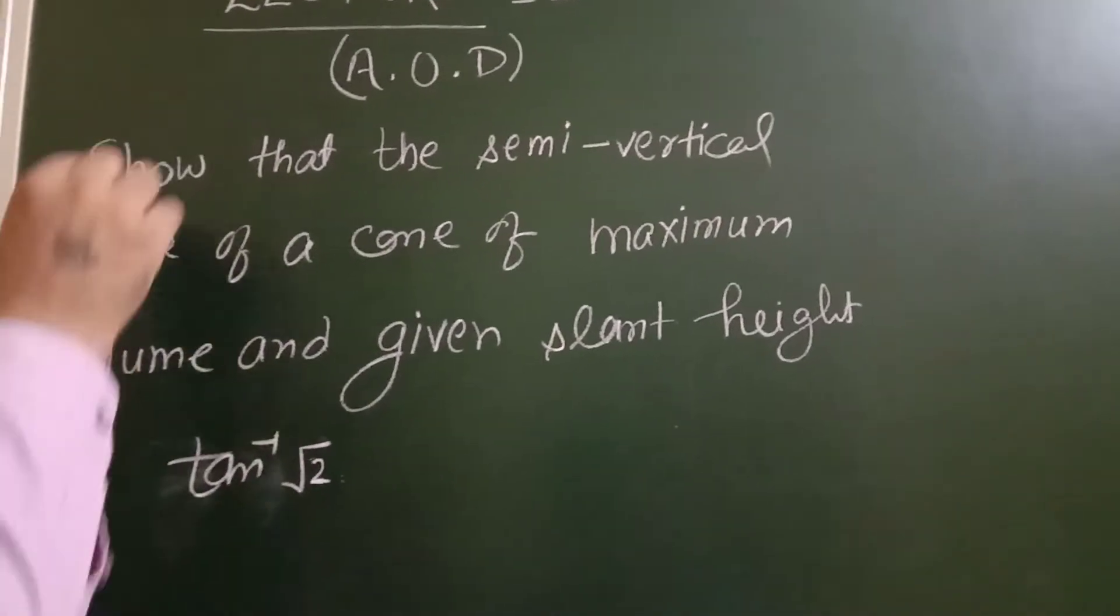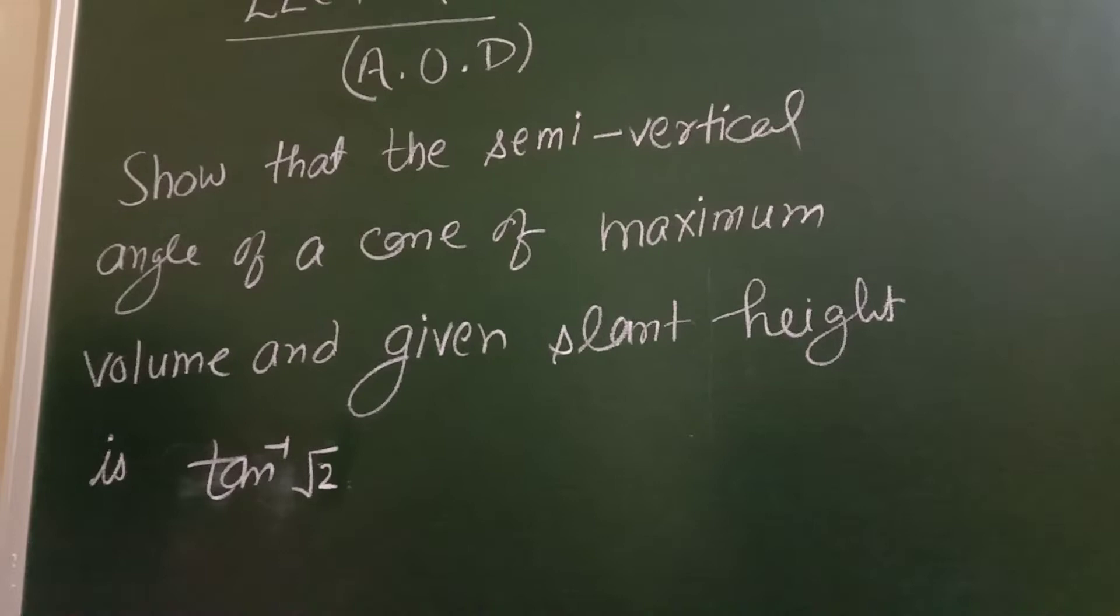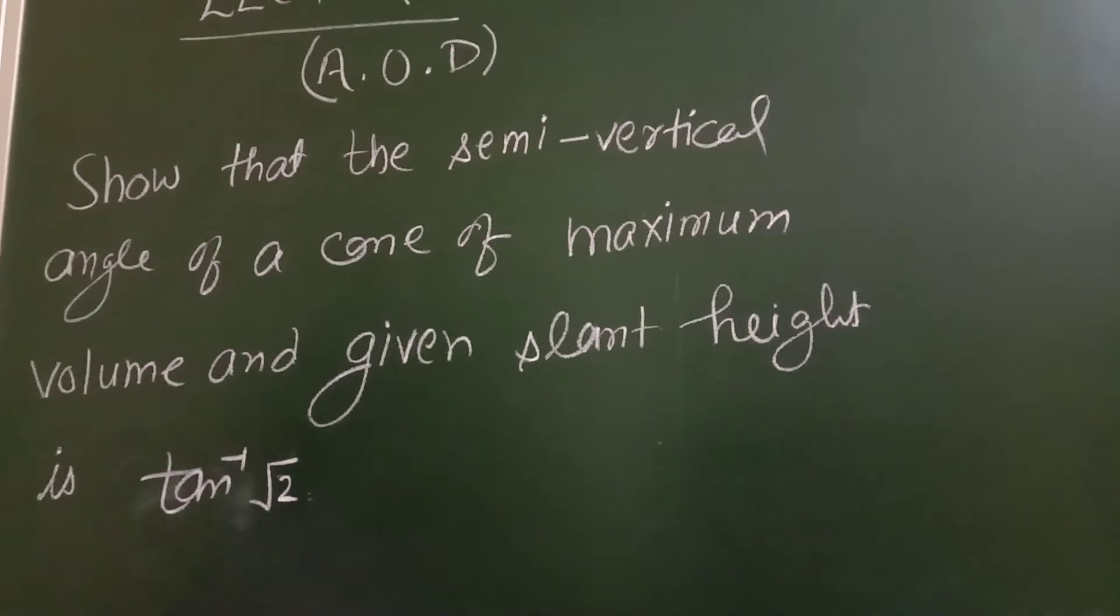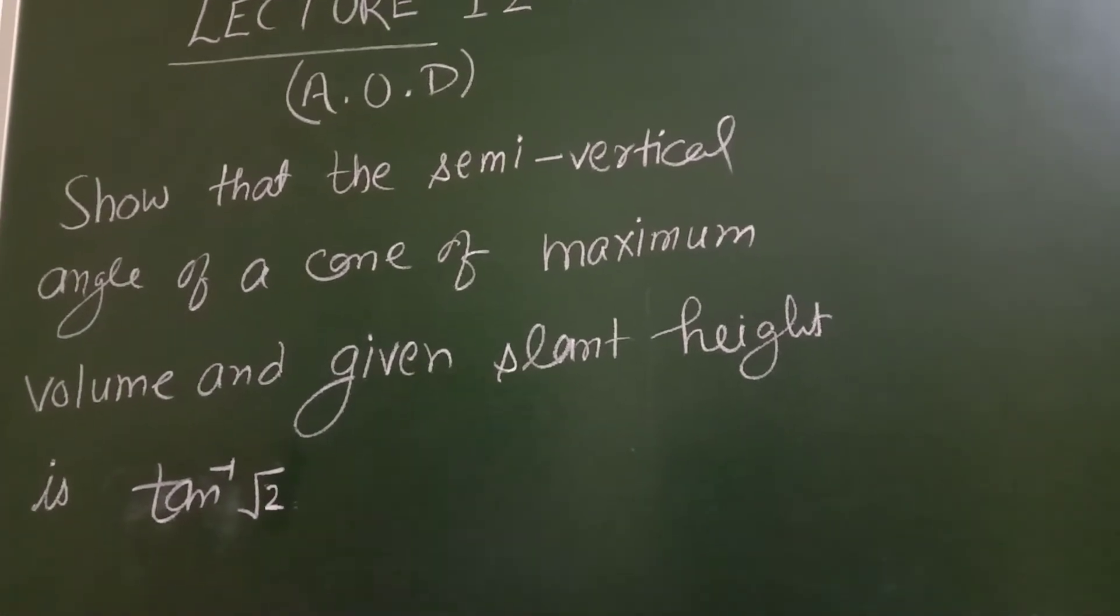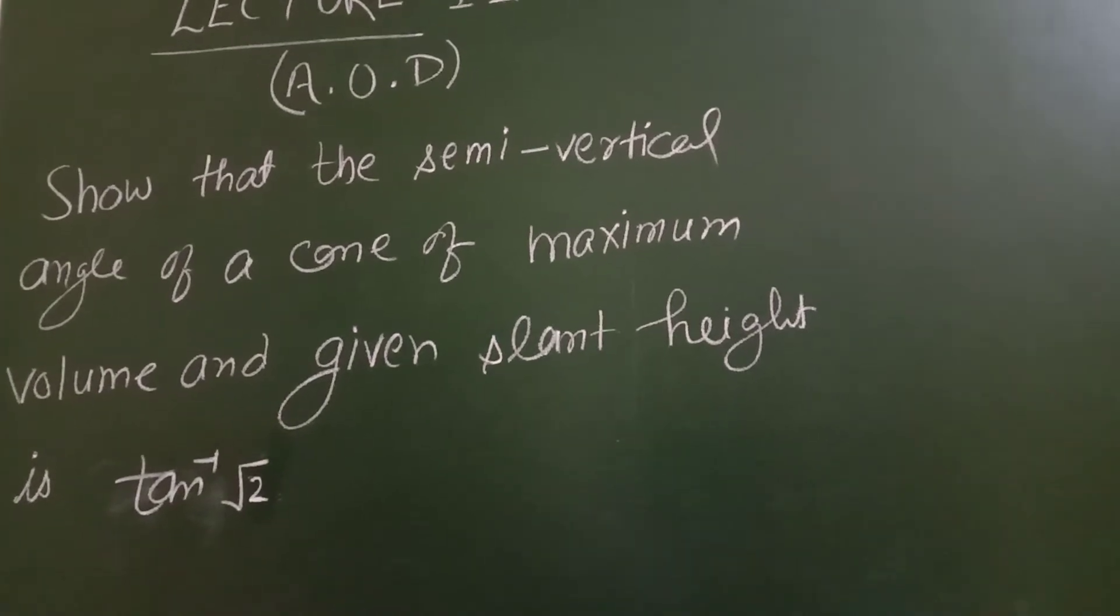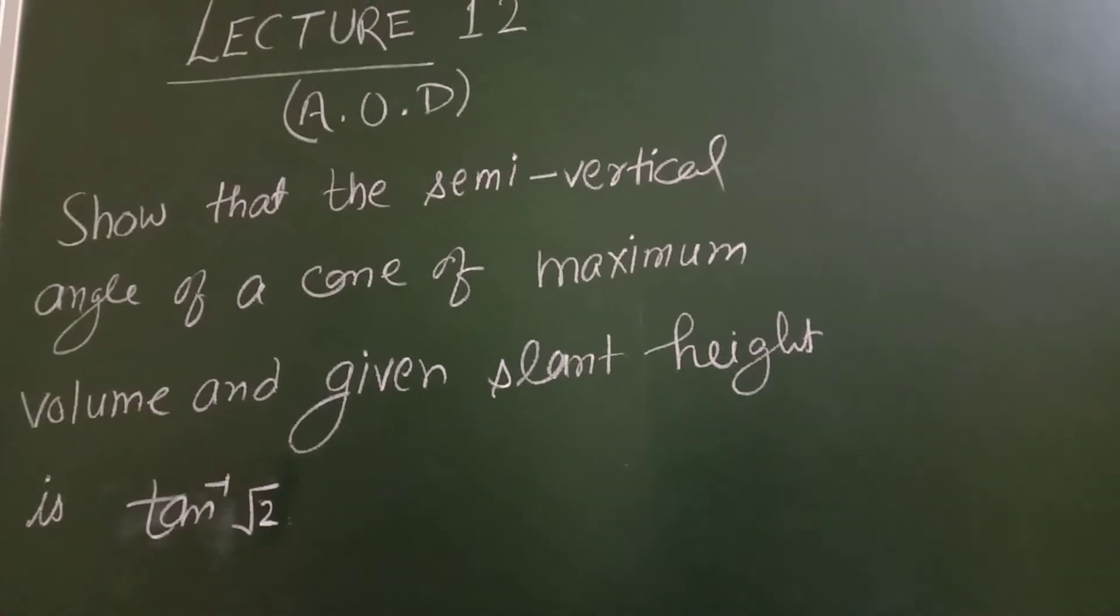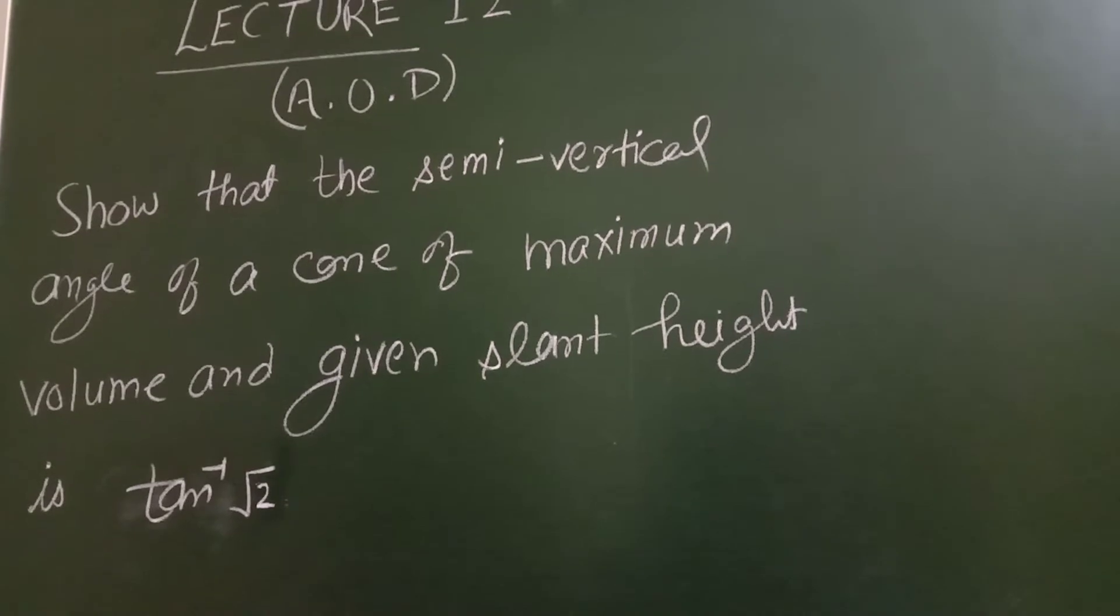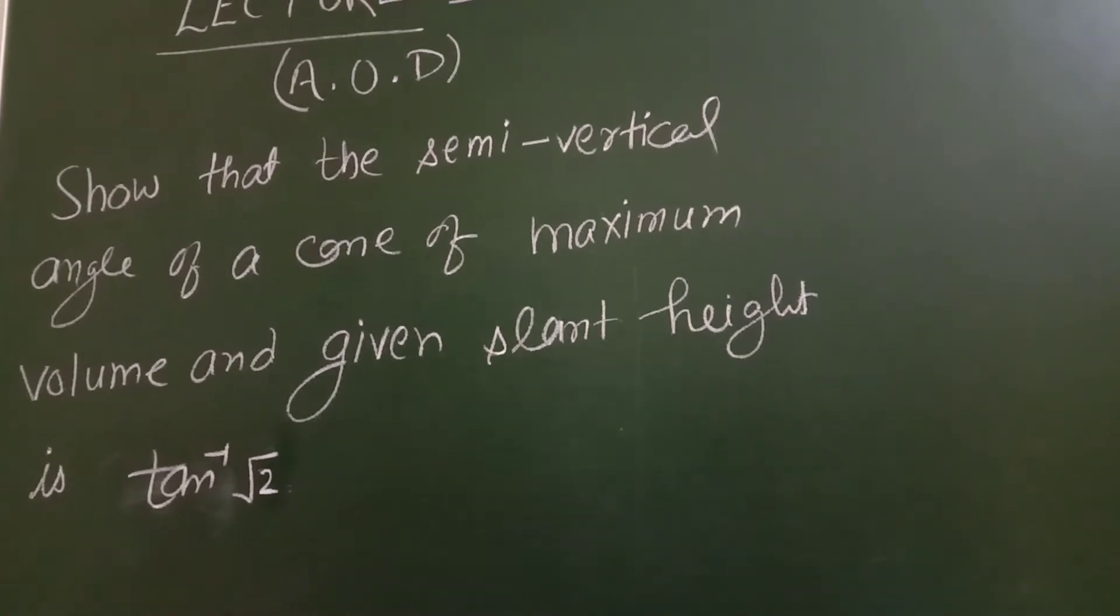Today's lecture, I am going to explain to you one question. See the question: show that the semi-vertical angle of a cone of maximum volume and given slant height is tan⁻¹(√2).